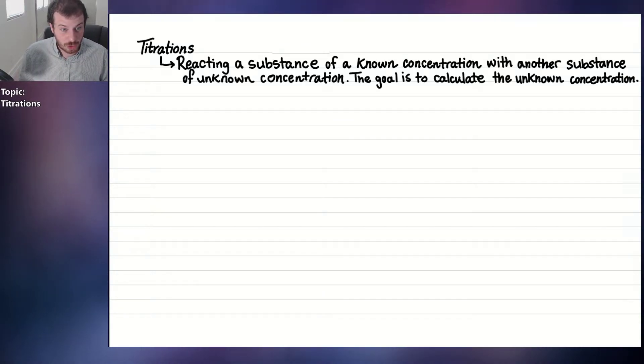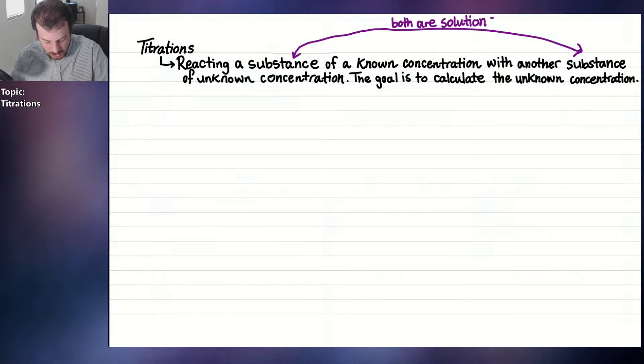One thing that's important about titrations is that it's not just any substance. The substances in a titration must be solutions. So when we talk about these substances, the known substance and the unknown substance, both are solutions. And for this class, they're both going to be aqueous solutions. That means a homogeneous mixture of a substance with water.